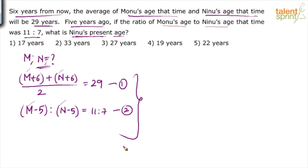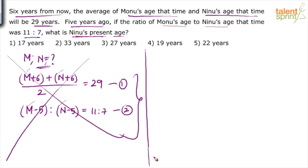But in my view, the conventional method is a waste of time, especially for questions on ages based on ratios. So how do you solve it without using these equations? The first step is to eliminate what you know is definitely wrong. From the second part of the question, five years ago the ratio was 11 to 7, which means five years ago Nino's age was a multiple of 7 and Mono's age was a multiple of 11.